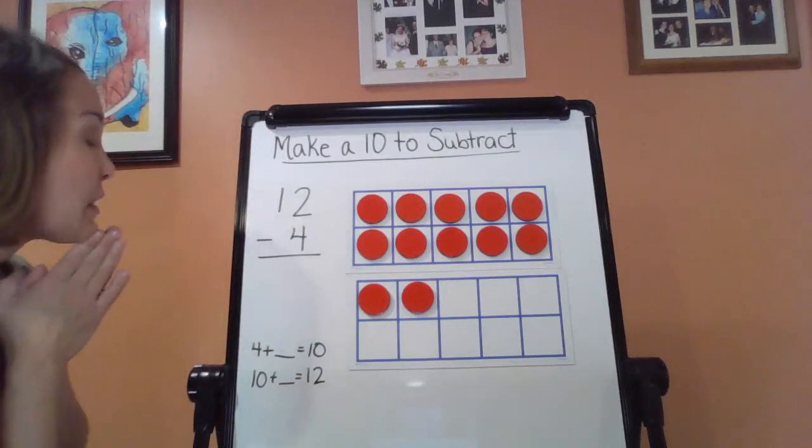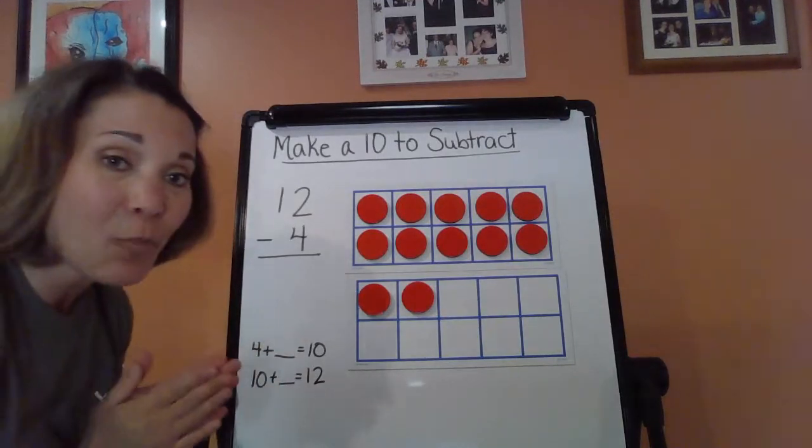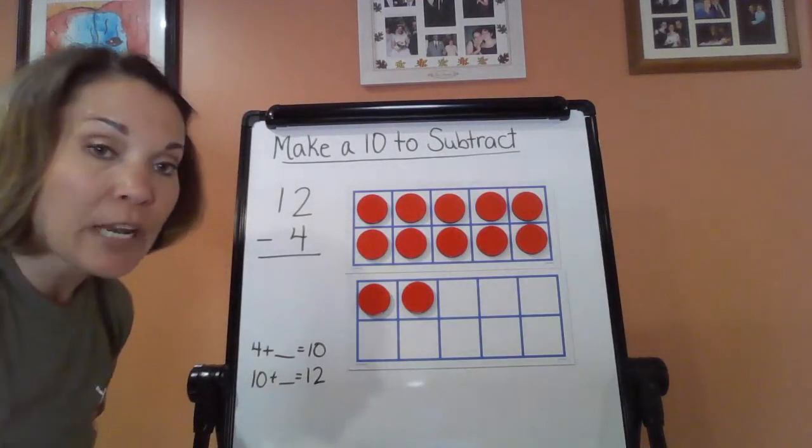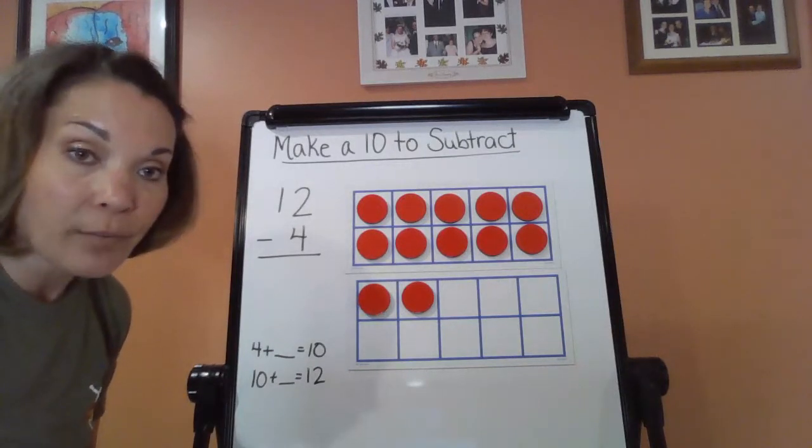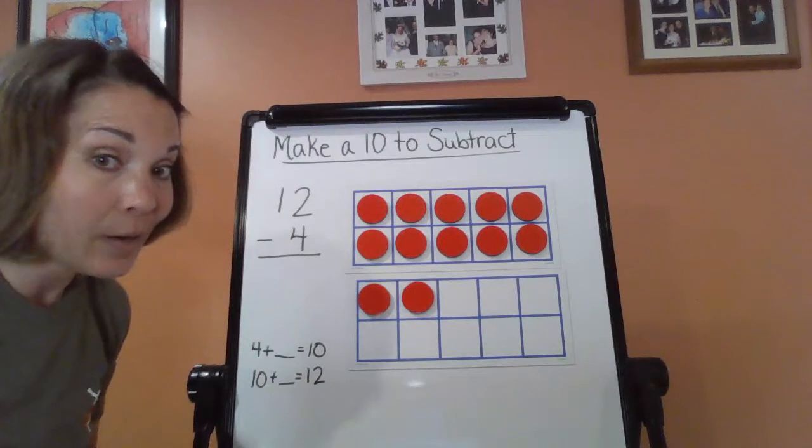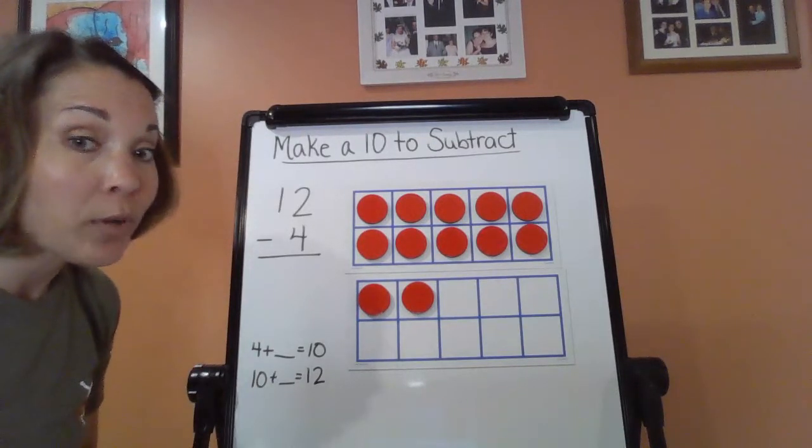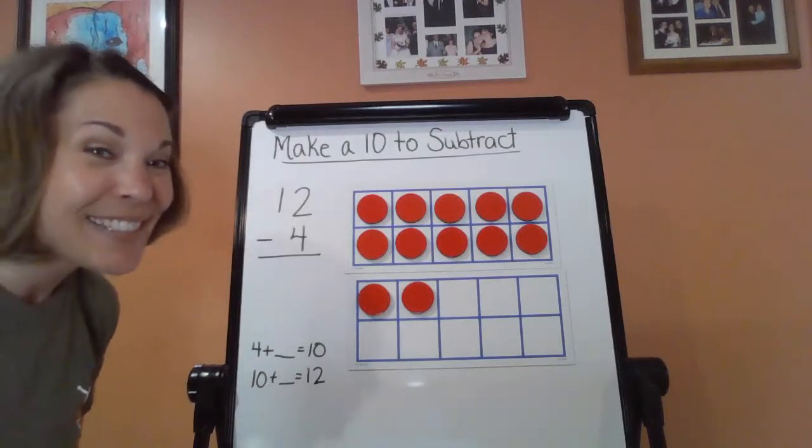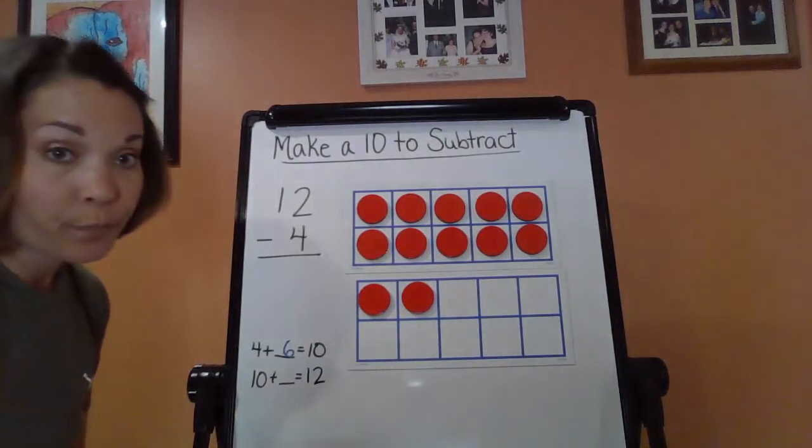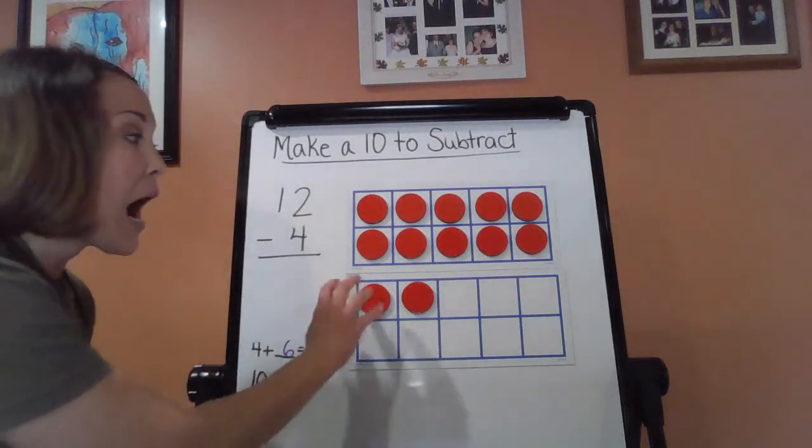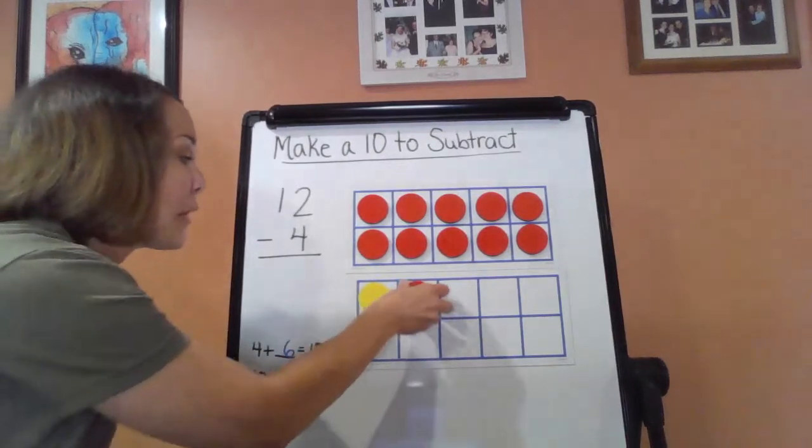So let's start, let's think about that for a minute. So 4 plus what number is going to give me 10? Think about those combinations of 10. Those facts that you need to master. Are you thinking? You already know what it is? 4 plus 6 is going to give you 10. So what I'm going to do now, this is part one. I'm going to take and flip six of them over to yellow.